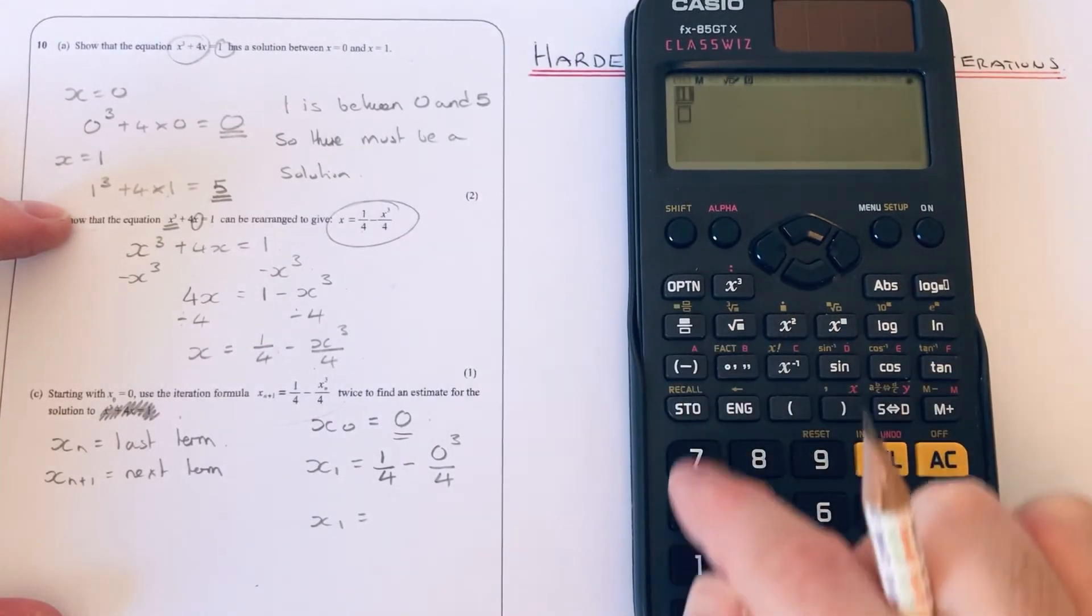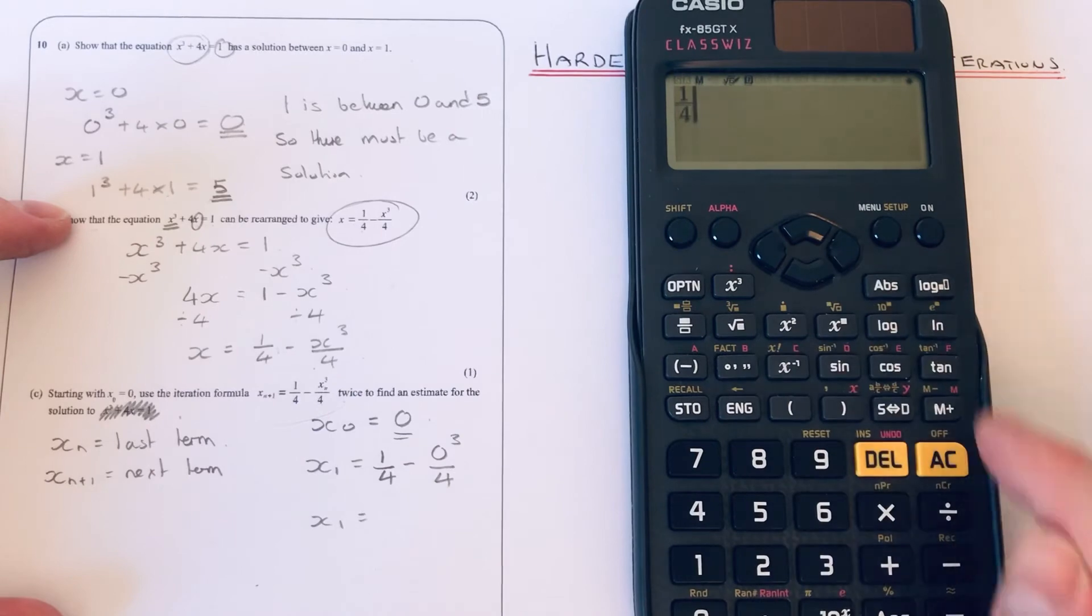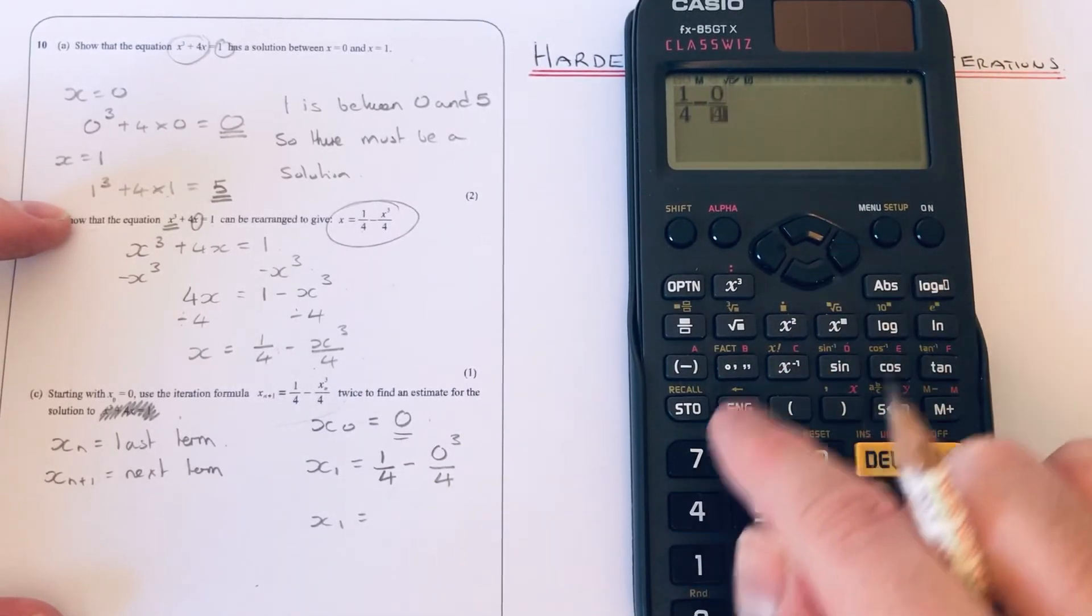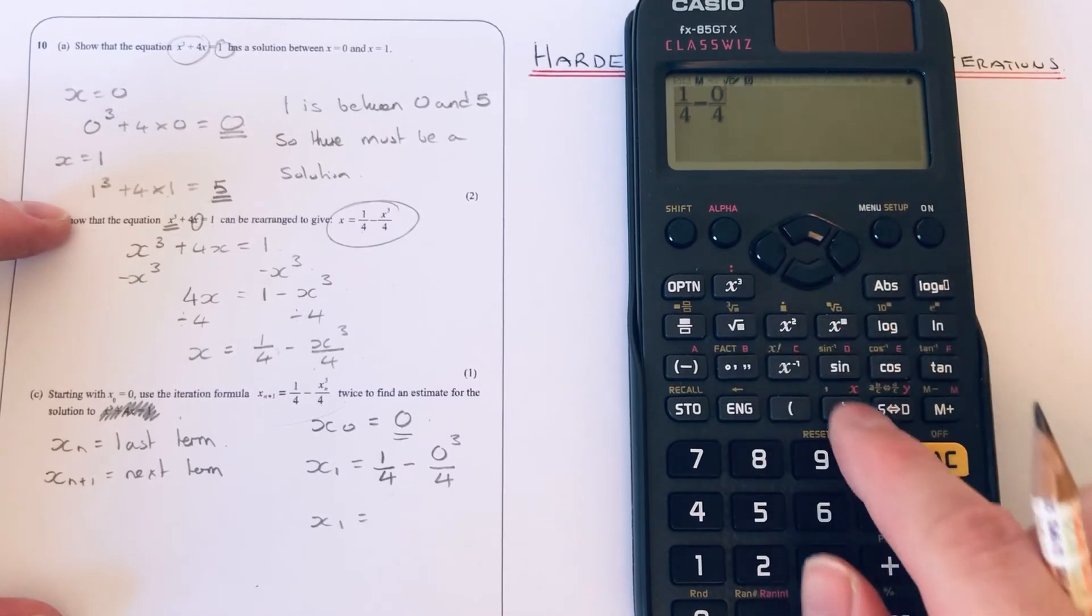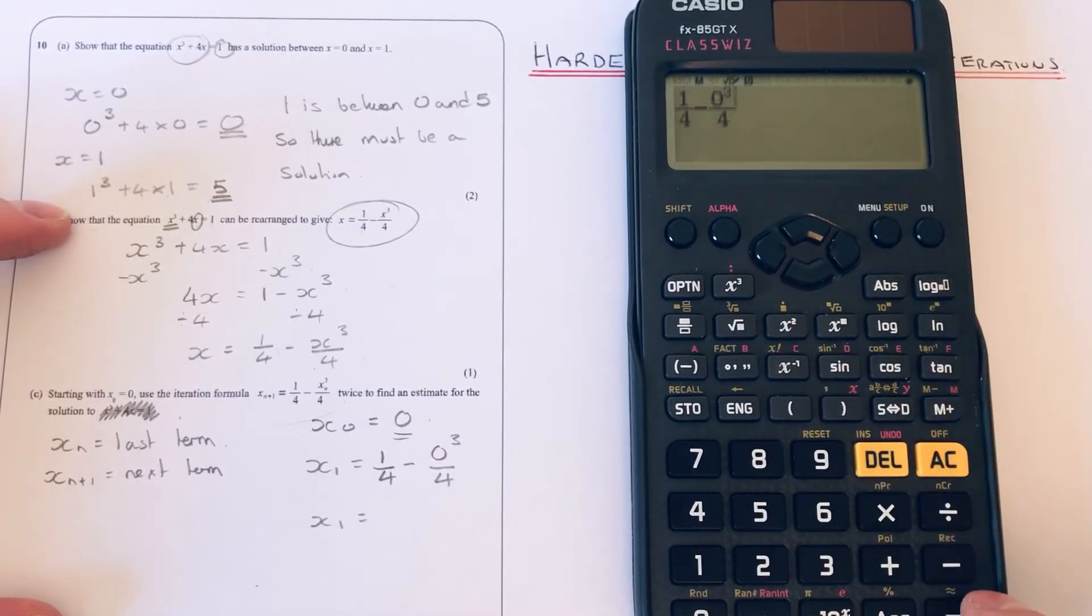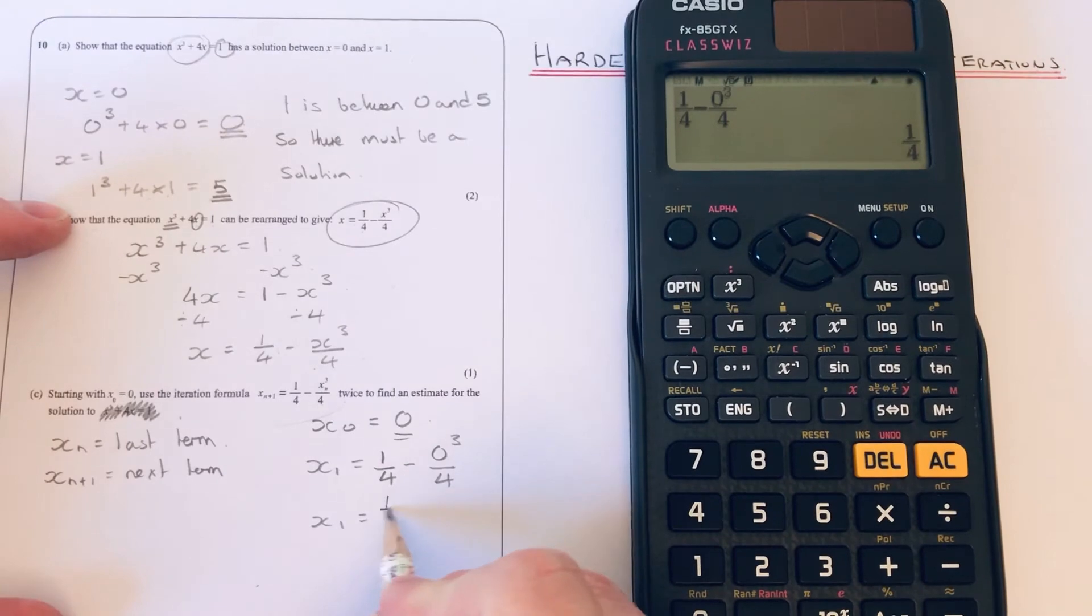So we've got 1/4 - 0/4, and we want to cube the 0. So that gives an answer of ¼.